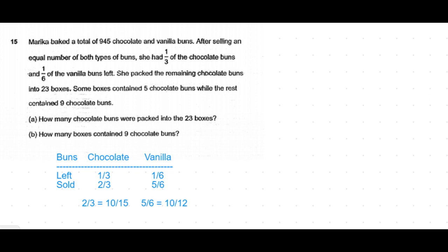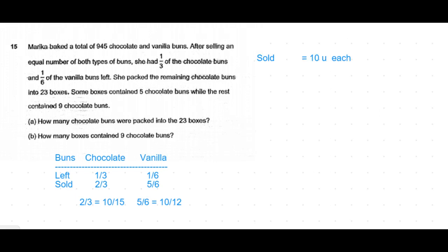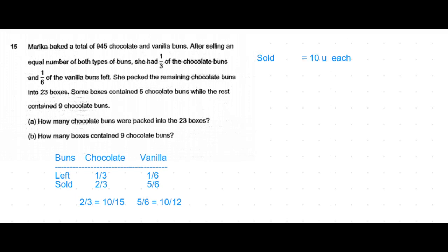But the question also says that an equal number of chocolate and vanilla buns were sold, which means two-thirds of the chocolate buns is equal to five-sixths of the vanilla buns. So when we equate the two fractions, two-thirds of chocolate buns is 10 over 15 and five-sixths of the vanilla buns is 10 over 12. So sold is 10 units each.